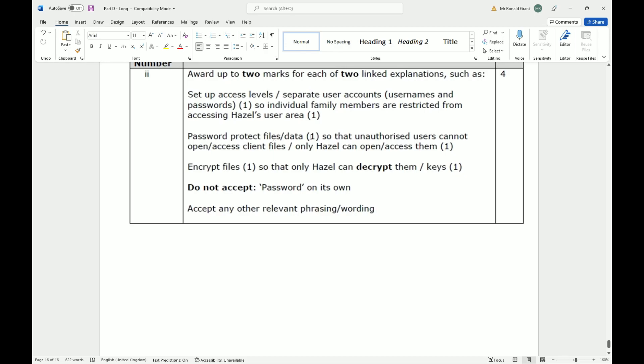She can also password protect files or data so that unauthorized users cannot open or access client files—only Hazel can open or access them. You could just have a folder on your desktop or in your documents with a password on there. Even if people try to click on it, the first thing it will do is pop up saying please enter password. If you don't enter the password correctly, then you're not able to actually go into the folder and view anything.